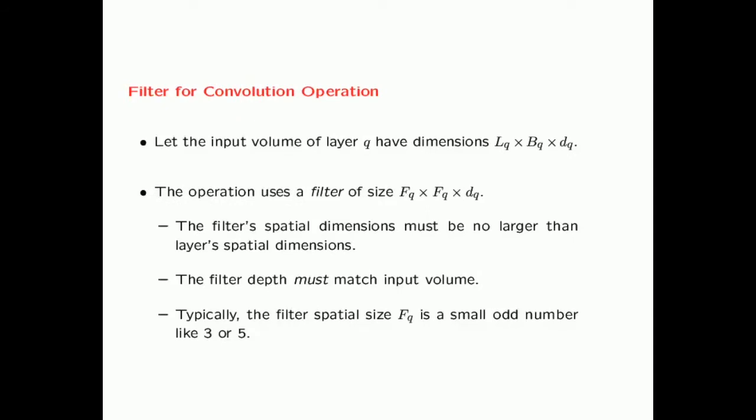A convolutional neural network uses a filter, which is analogous to a weight matrix in a traditional neural network. Just as a traditional neural network uses a weight matrix to transform features from one layer to the next, a convolutional neural network uses a filter. Just as the layers are three-dimensional, the filter is also three-dimensional.